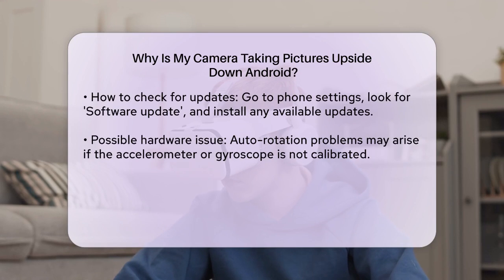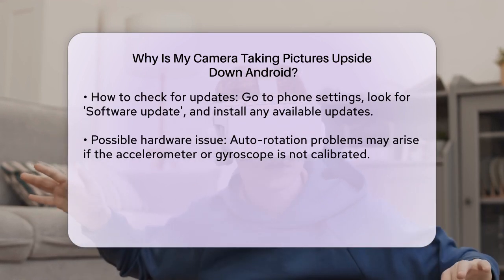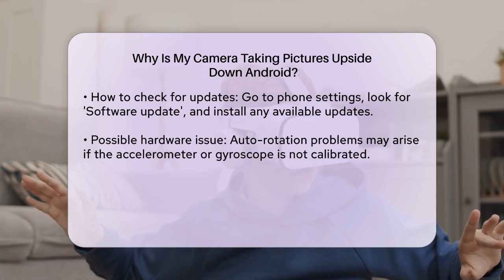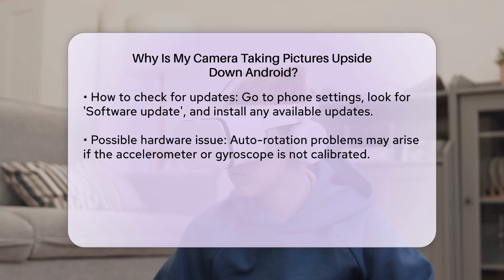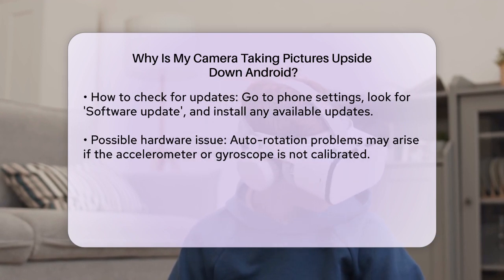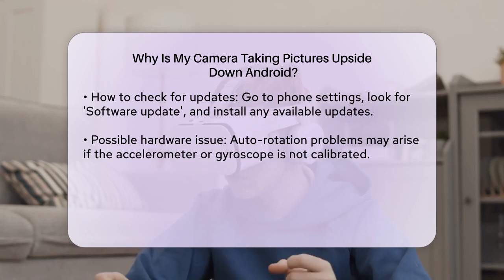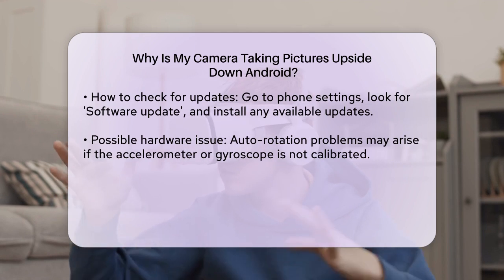Another possible reason for upside down photos is how the phone is handling orientation. Some phones might have issues with auto-rotation, especially if the phone's accelerometer or gyroscope is not calibrated correctly. However, in most cases this is more related to the camera app settings rather than the phone's hardware. If you are still having trouble, it might be helpful to restart your phone, as a simple reboot can resolve temporary software glitches affecting the camera.